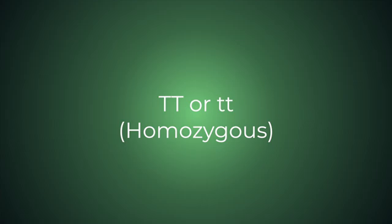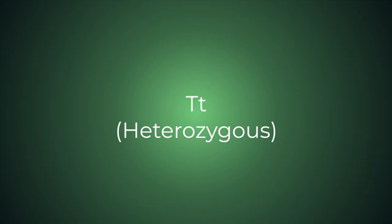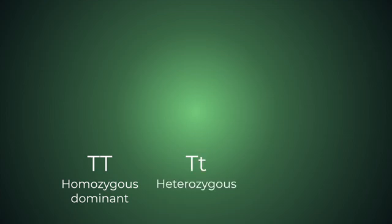But we also have fancier terms to describe this even further. If an organism has two of the same alleles, we call it homozygous. And if it has different alleles, we call it heterozygous. So our options are homozygous dominant with two big Ts, heterozygous with big T little t, and lastly we have homozygous recessive, little t little t.